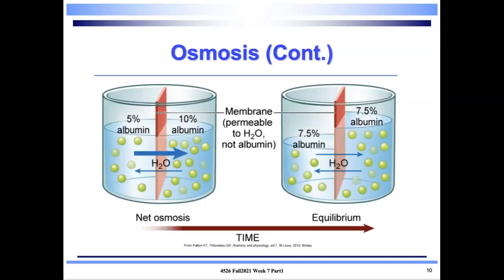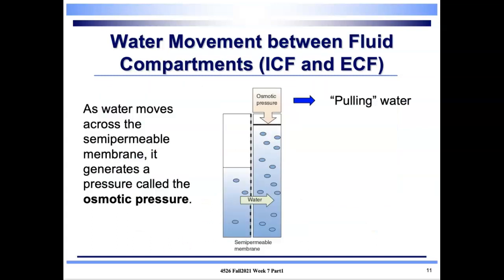In an active cell, there's a constant exchange of substances between compartments because they don't want a net gain or loss of water — they want to make it equal. In this diagram, we have albumin: five percent on one side of the semi-permeable membrane and ten percent on the other side. Albumin doesn't move across; instead, water moves across, resulting in a net equilibrium of 7.5 percent albumin on both sides. Water moves between the intracellular and extracellular fluid compartments through this osmotic pressure — this pulling of water.